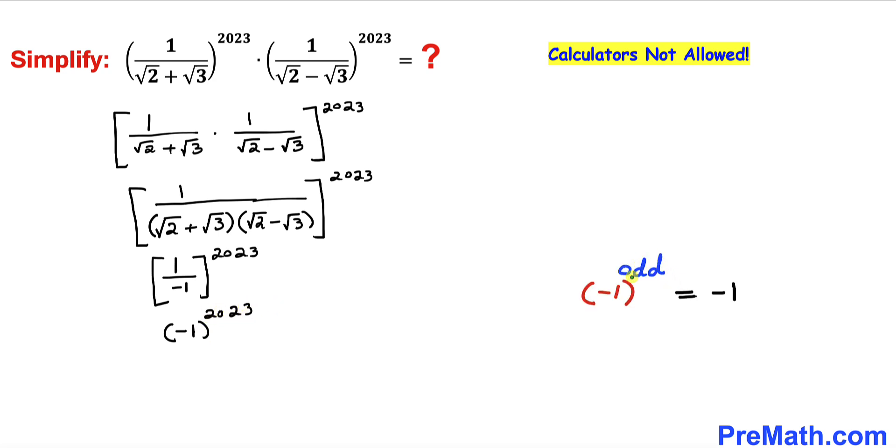Now let's recall this fact: if our exponent is an odd number and our base is negative 1, then this is always equal to negative 1. And we can see our exponent is an odd number. So therefore this is equal to negative 1.